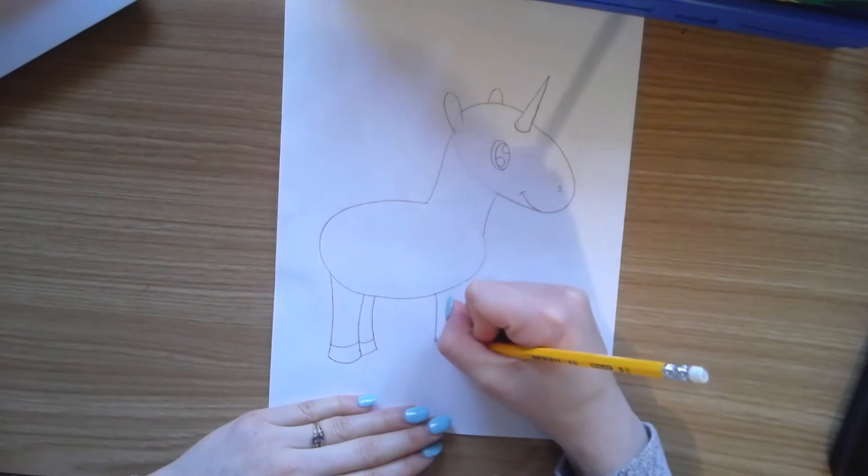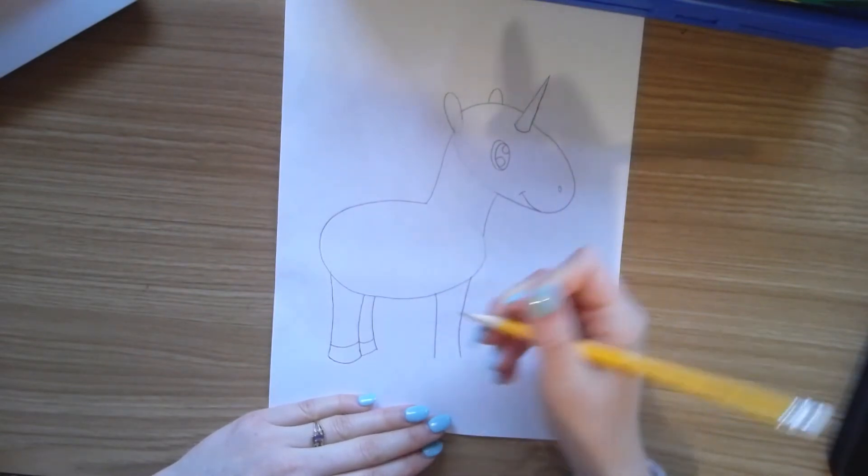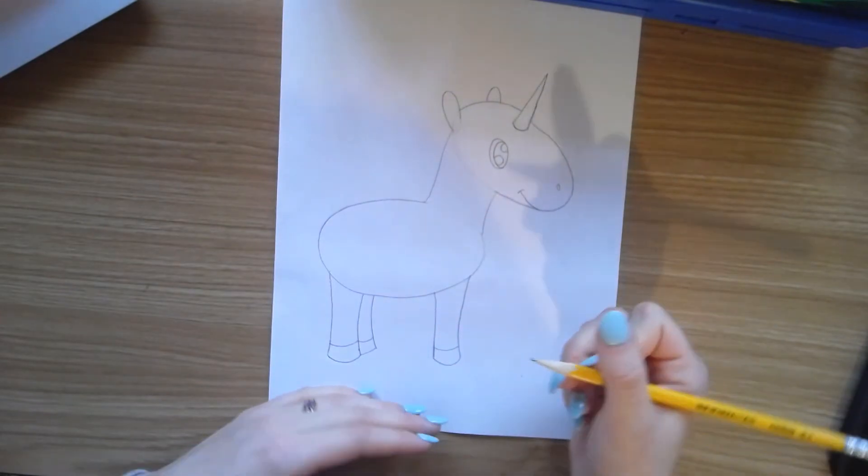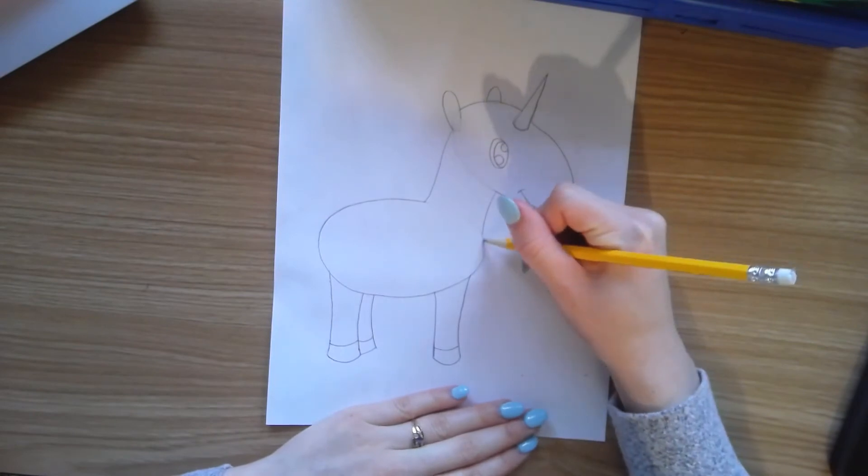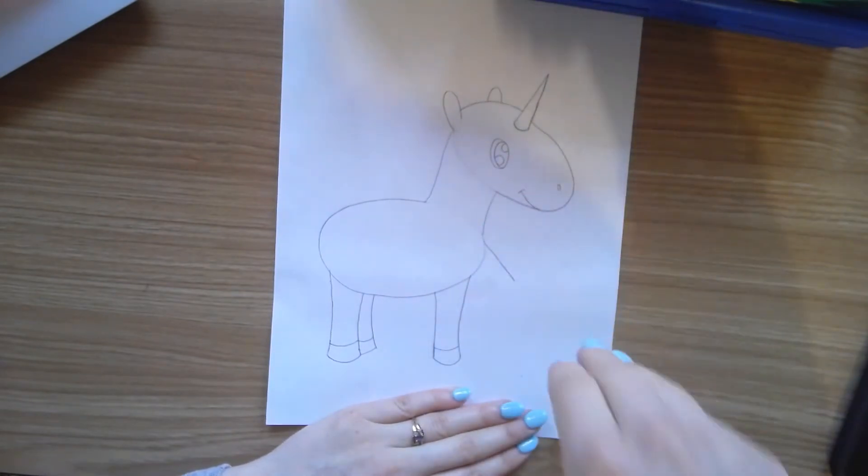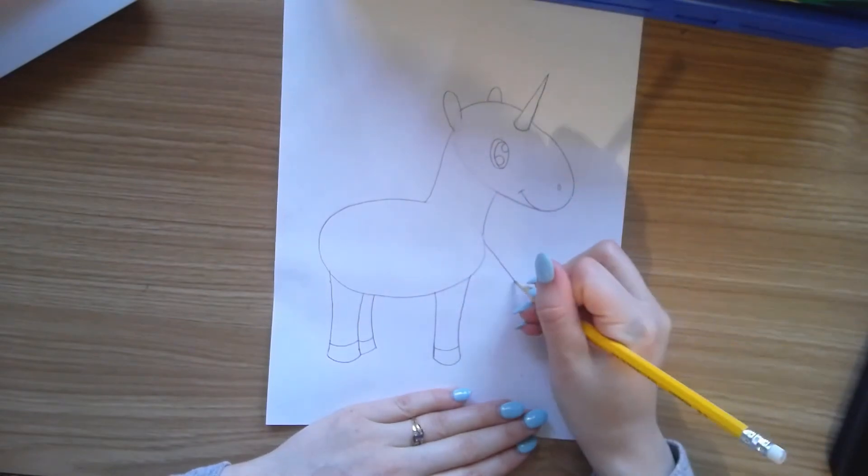Then we're going to draw another line straight down and then add a hoof. Now this leg I want to have going up, so I'm going to draw a leg like the knee, kind of curved, and then going down.